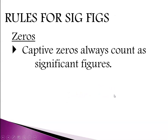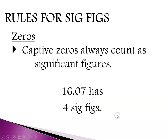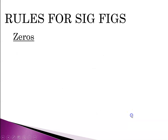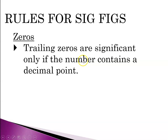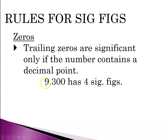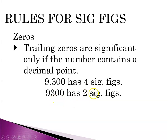Zeros stuck between two other numbers are called captive zeros, and captive zeros are always significant. So the number 16.07 — with a zero in the middle — has four significant figures. Finally, we have trailing zeros: zeros at the end of a number on the right-hand side. They are only significant if the number contains a decimal point. So the number 9.300, which has a decimal point, has four significant figures — meaning it was measured on a device capable of measuring to the thousandths place. But the number 9300 has only two significant figures because there is no decimal point.